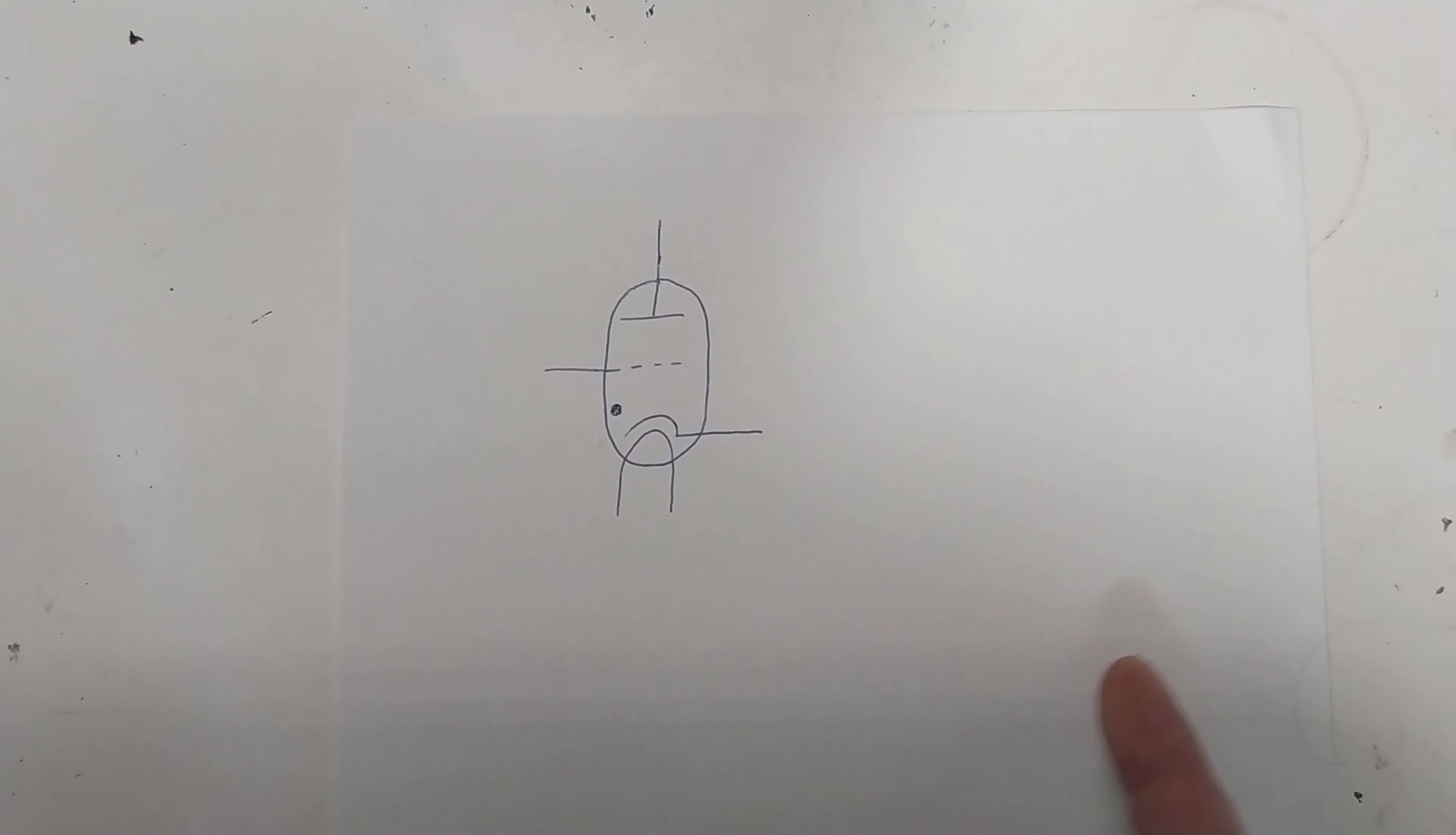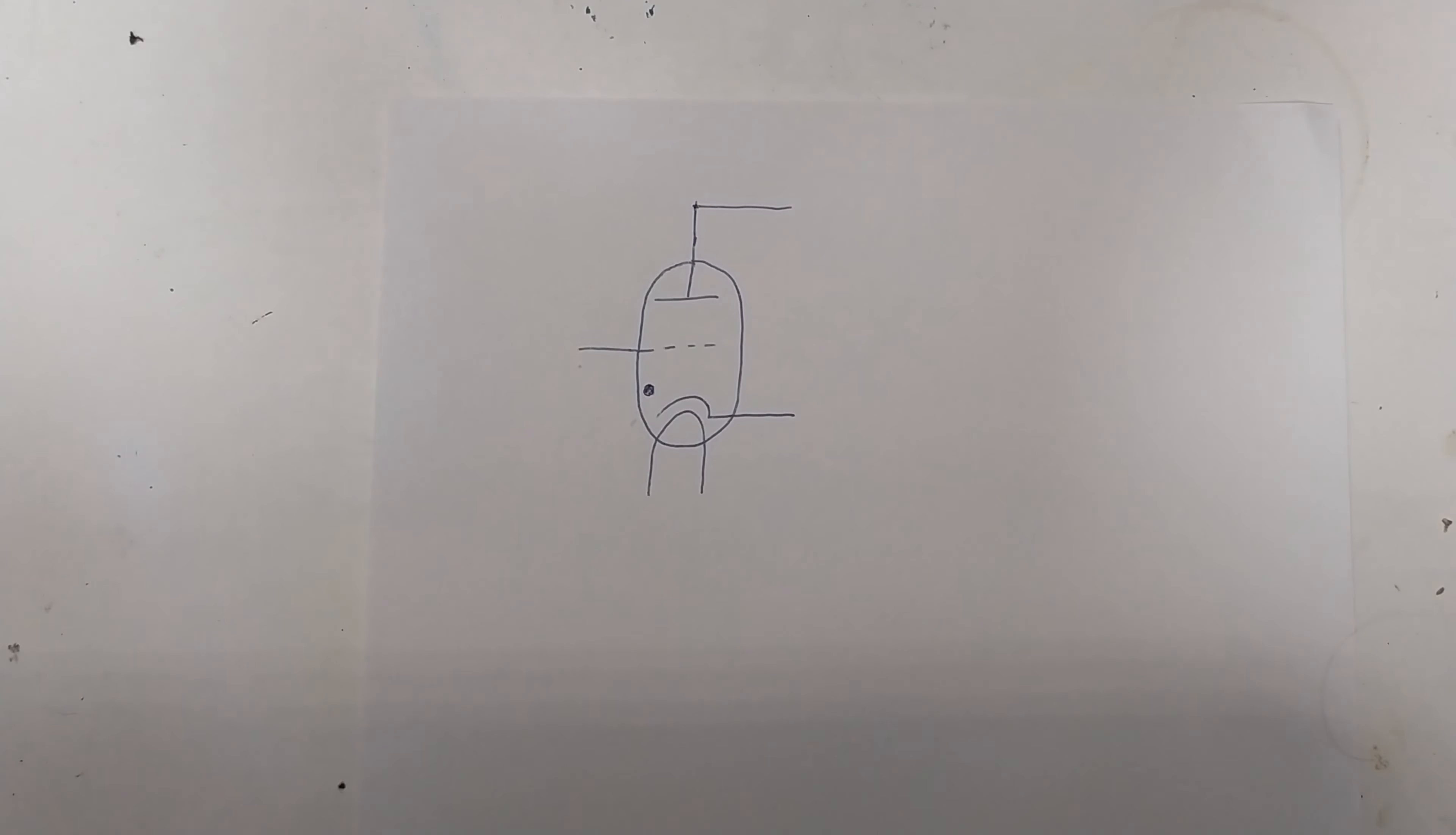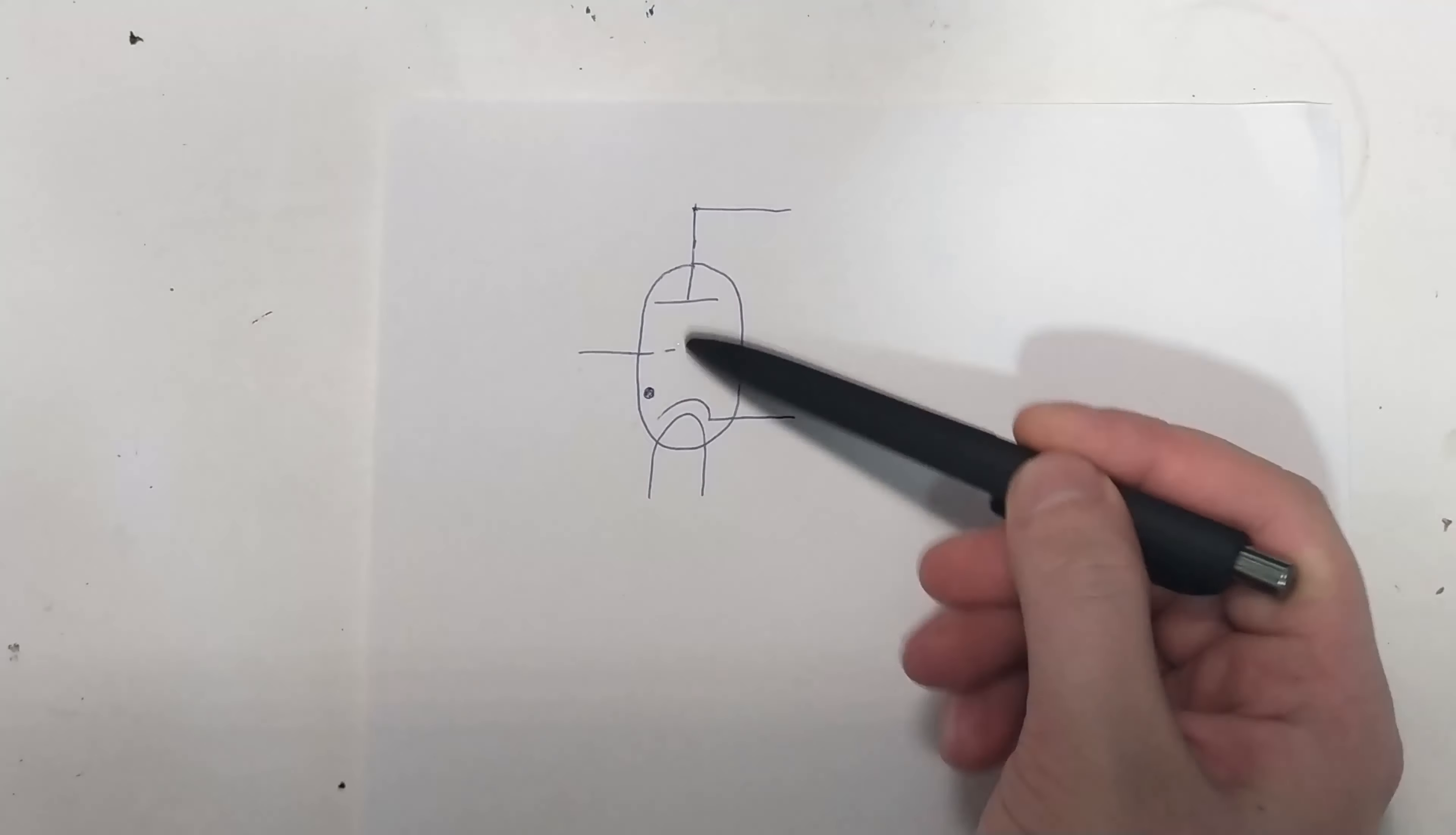This tube, if you put a voltage on here between the anode and the cathode that is above the striking or firing voltage, and this grid is just at cathode potential, it will fire. There will be a gas discharge in here that will allow relatively large amounts of current to flow. What you can do though is you can bias this grid negatively in respect to the cathode, and then this won't fire until you bring up the voltage on here. At which point the same thing will happen, you'll get the gas discharge.